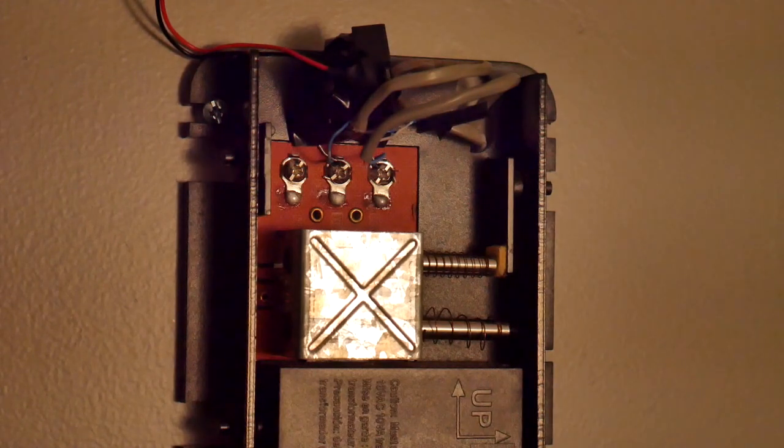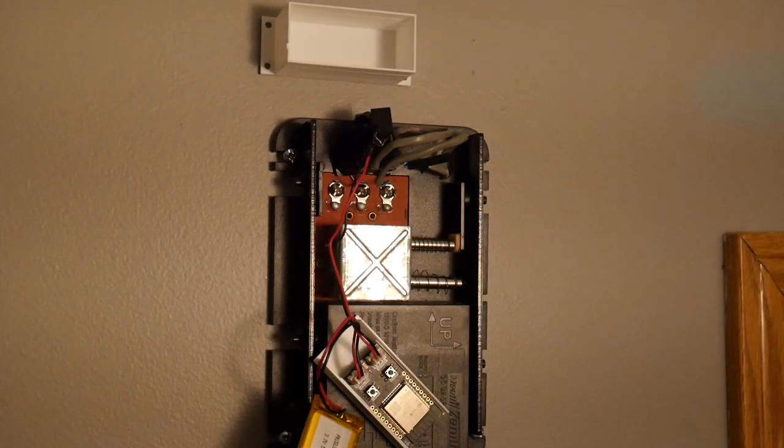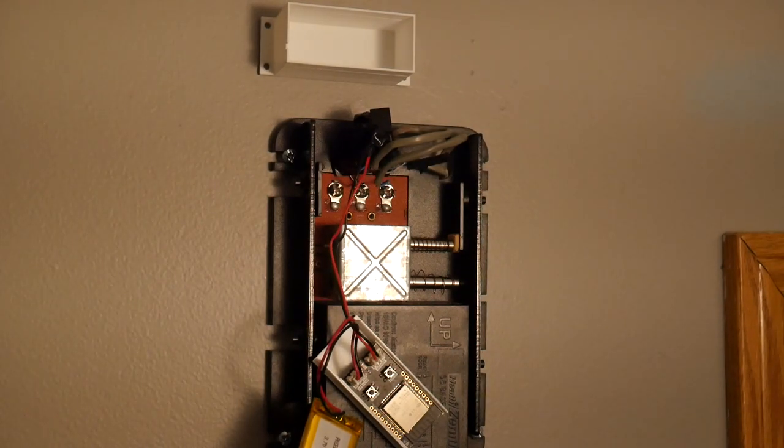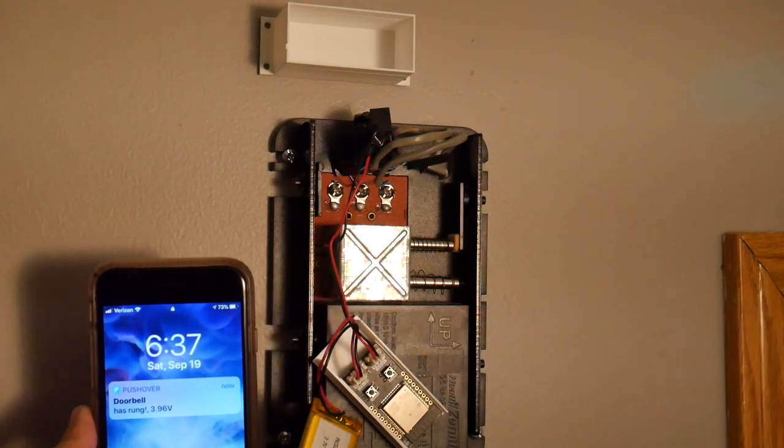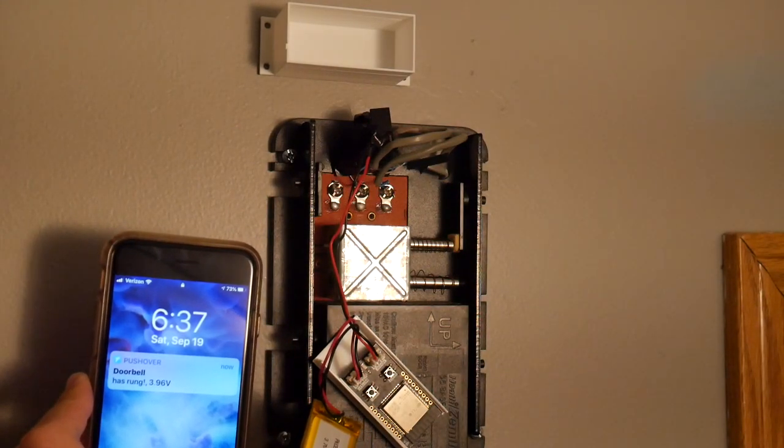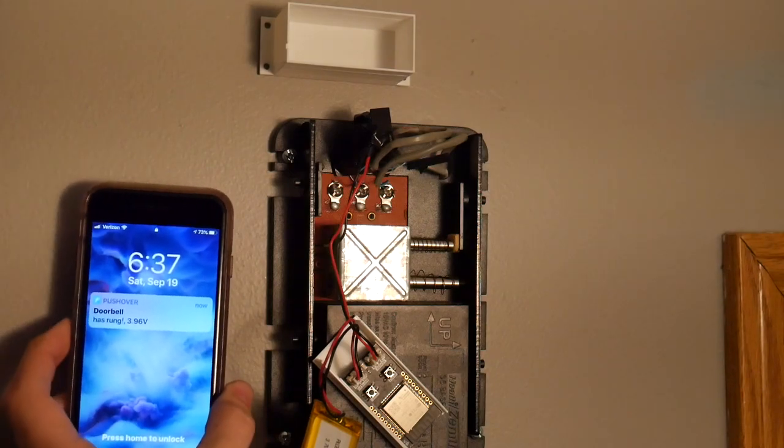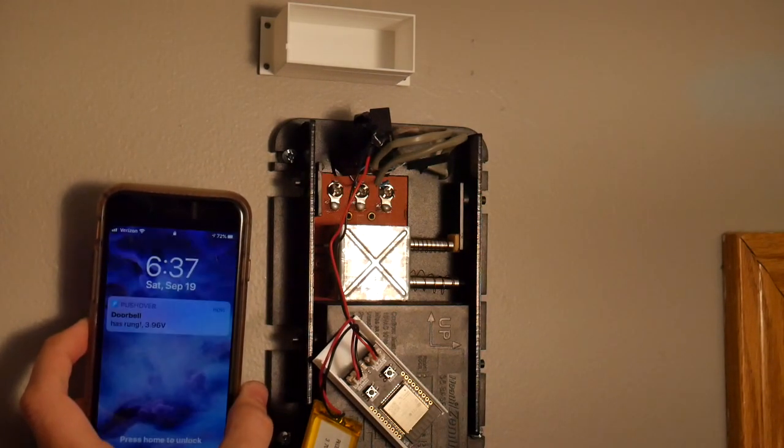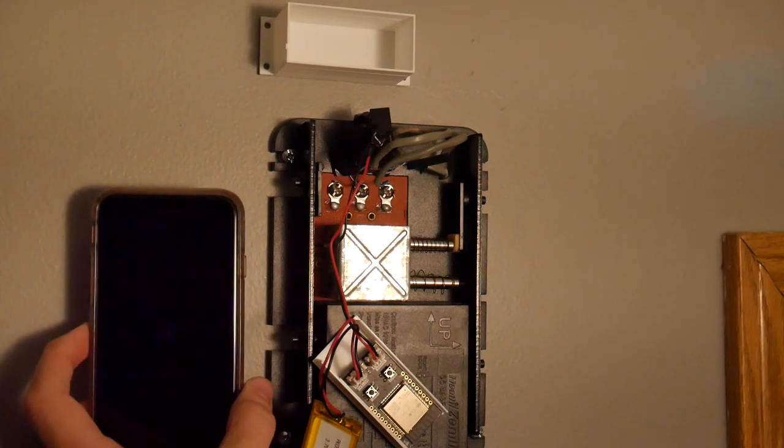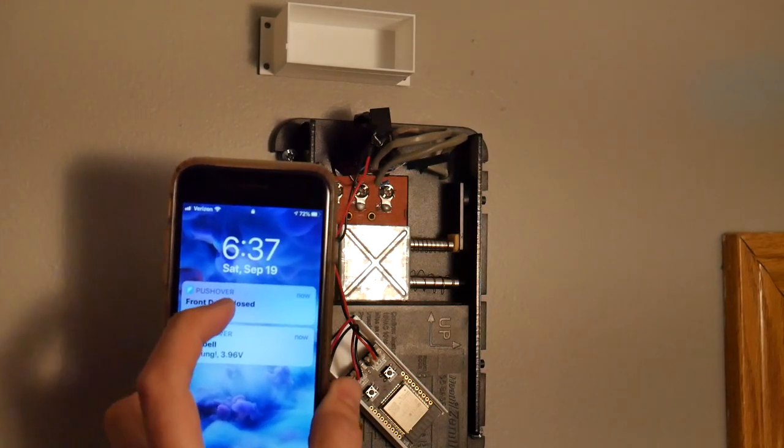Now I can just ring the doorbell and I'll show you how sensitive this is to a simple little tap of the doorbell. You see it woke up the TrigBoard there with that dry contact and then we got the push notification on the phone, doorbell has rung. Of course I've got a TrigBoard also monitoring the front door, so when I shut that we then will get that push notification as well that the front door has closed. Pretty cool, huh?